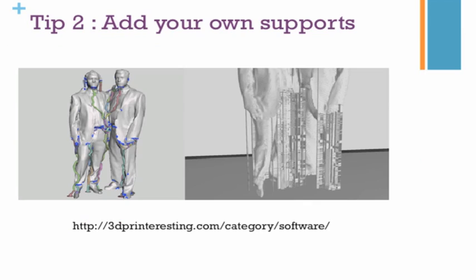If you cannot avoid support material, it's a good idea to add your own. The tip is to design the support material so that it supports the overhang but has minimum contact with the rest of your model. You can see this in the left image — the colored support materials conform to the model itself — while on the right image is the standard support material the software automatically generates, going straight down from the model.